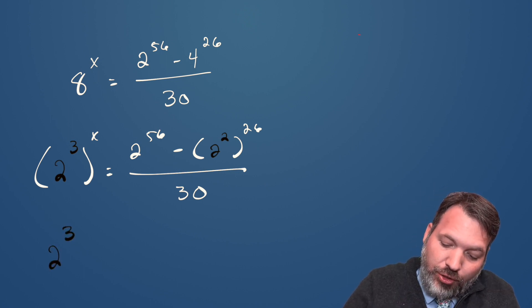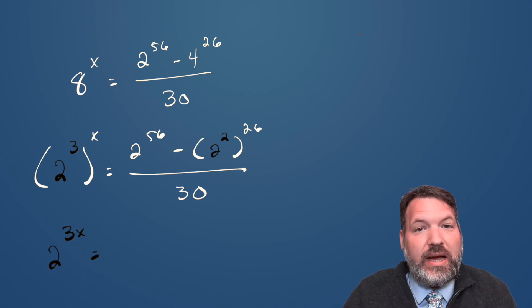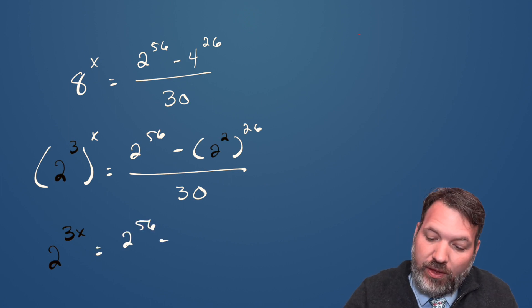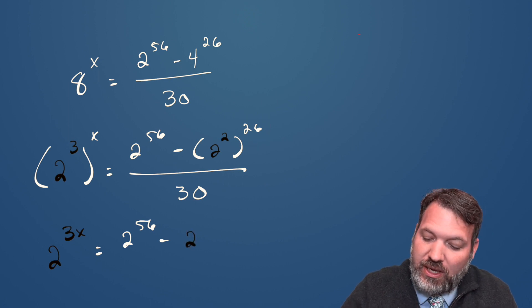So this becomes 2 to the 3x power, 3 times x, equals 2 to the 56th. We're still not doing anything there. Minus 2 to the 2 times 26 is 52.